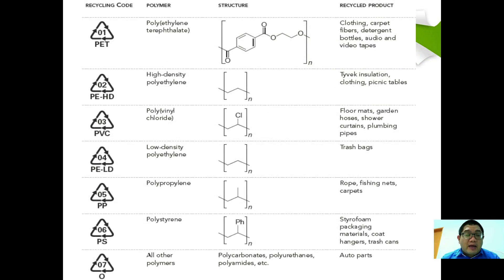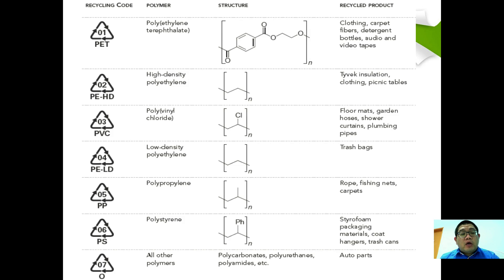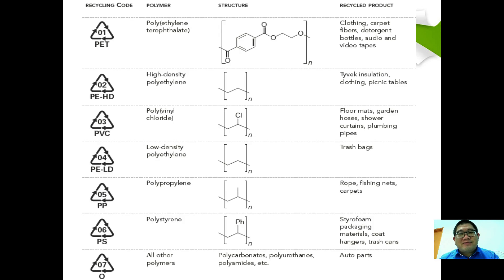The table indicates the seven recycling codes, the polymers corresponding to each code, and the various uses of the recycled products. These are the codes we frequently see in daily life. Hopefully this helps build greater consciousness about recycling polymers. This concludes our video on polymers and the semester three content — good luck, and I hope these video lessons have helped you in understanding and learning chemistry.